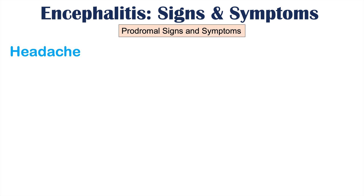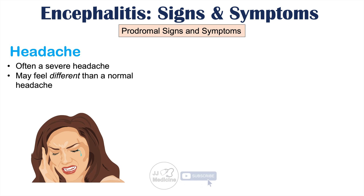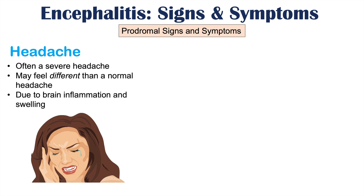There are prodromal signs and symptoms of encephalitis — signs and symptoms that occur early on in the disease process. One of them is headache. Oftentimes this is a severe headache and it may feel different from a normal headache. It is due to brain inflammation and swelling, which activates pain receptors leading to the sensation of a headache.